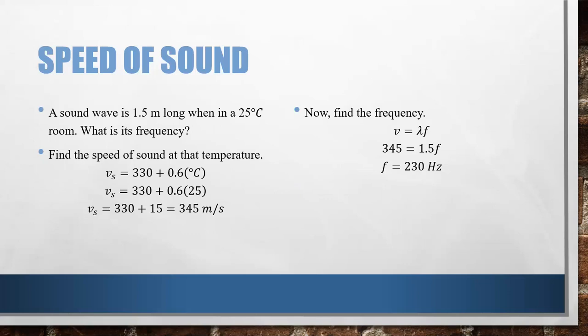Let's try another one. This time, I give you the wavelength of 1.5 meters at now a 25 degrees Celsius room. Again, since I know the temperature, I want to figure out the speed of sound at that temperature first. So, 330 plus 0.6 times 25, I get the speed of sound at that room temperature of 345 meters per second. Using the wave equation again, 345 equals the wavelength, which is 1.5 times frequency. I'm going to divide and I get a frequency of 230 hertz.